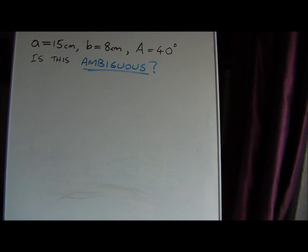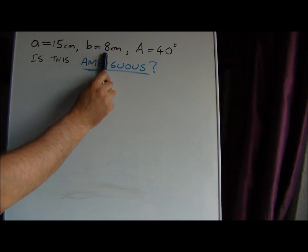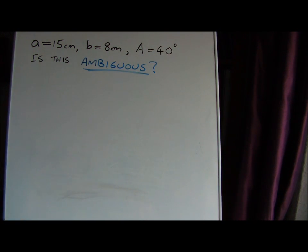In this example, we're given some information about the sides of a triangle and one of the angles. We're going to try and determine whether this information about the triangle is ambiguous - can we make two possible triangles from the given information or is it unique? We're given side A is 15, side B is 8 and angle A is 40 degrees.